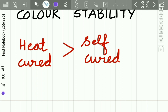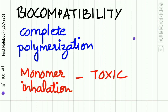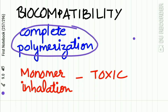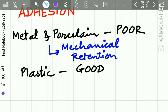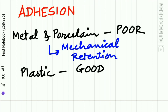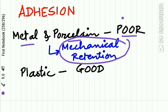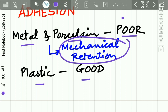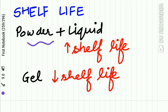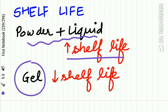The color stability of heat-cured resin is higher than self-cured resin. Regarding biocompatibility, a completely polymerized material is very biocompatible, but inhalation of the monomer is toxic, and in some individuals this monomer may cause an allergic reaction. Adhesion of acrylic resin to metal and porcelain is very poor, so mechanical retention is needed, while adhesion to plastic is good. If the material is provided as powder and liquid, the shelf life is sufficient, but in gel form the shelf life is decreased.